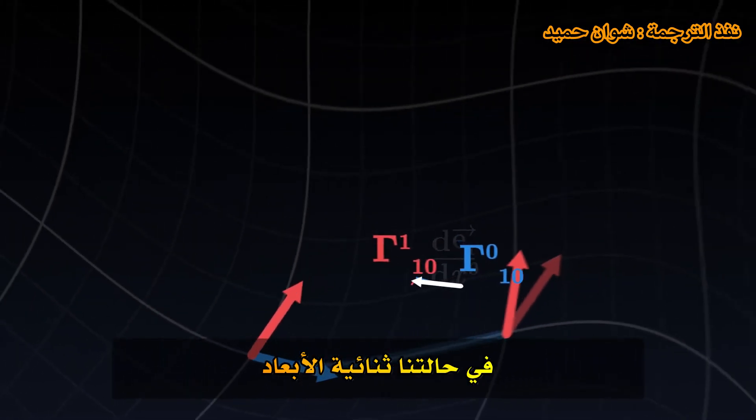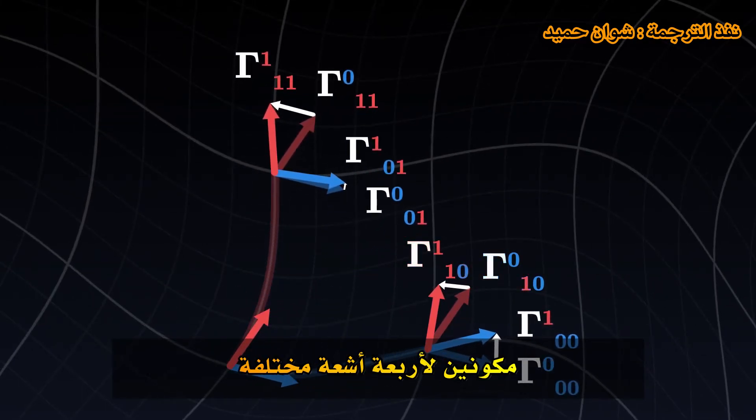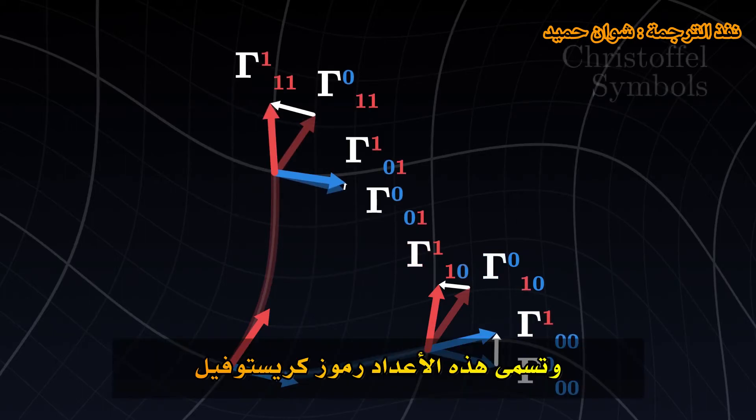In our two-dimensional case, these components exist in eight different versions, two components for four different vectors. These numbers are called Christoffel symbols.